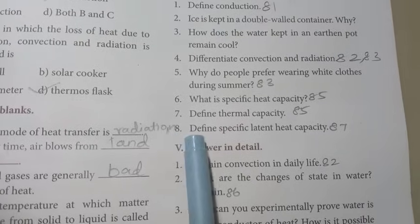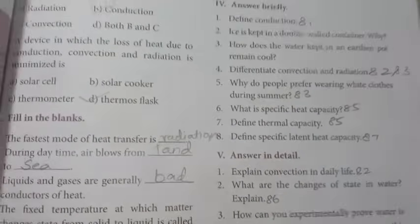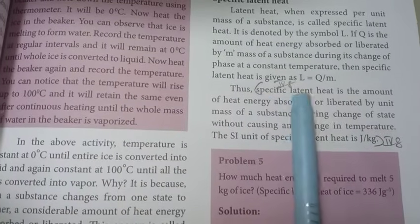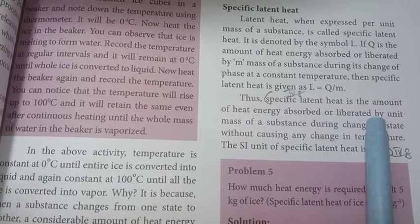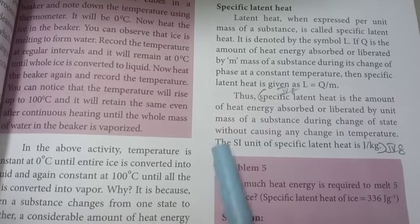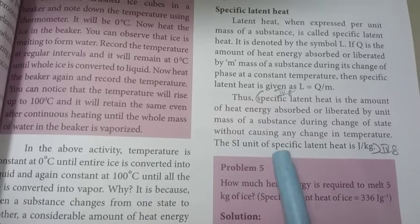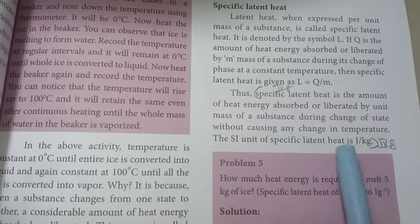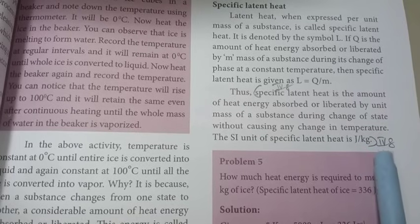Then Roman number 8: Define specific latent heat capacity. Page number 87, right side. Specific latent heat is the amount of heat energy absorbed or liberated by unit mass of a substance during change of state without causing any change in temperature. The SI unit of specific latent heat is Joule per kilogram, J by kg.